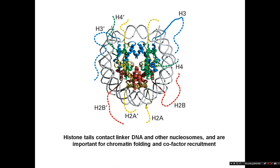This is another view of that same X-ray crystallography picture showing the coloured histone proteins. It shows the N-terminal tails, which stick out from between the gyres of the DNA. We don't have full structural information for these because they're in different positions and don't fold into something X-ray crystallography can detect. But we know the histone tails contact the linker DNA and are important for recruiting co-factors and helping to recruit proteins to the chromatin.